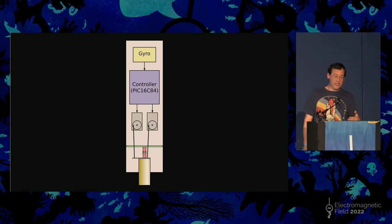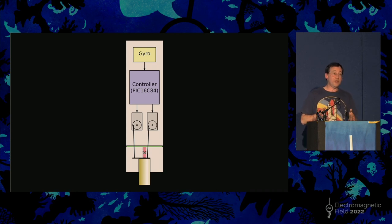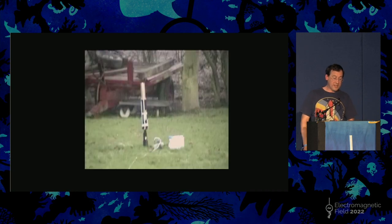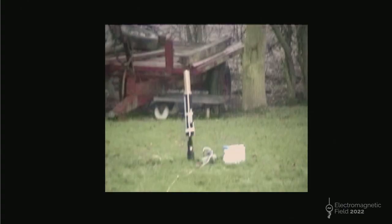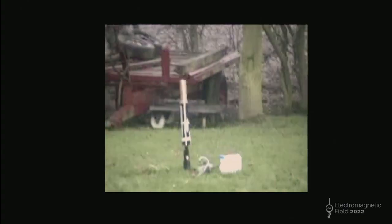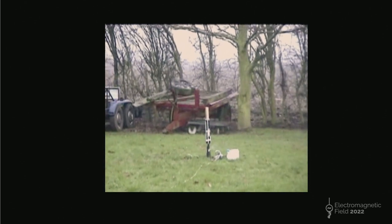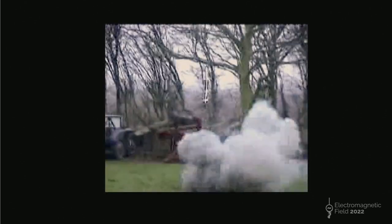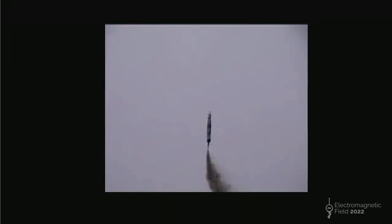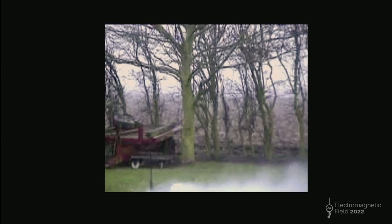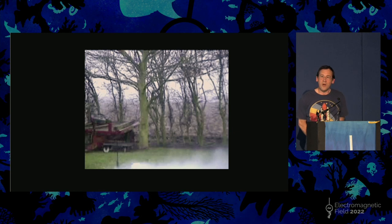The inside of the rocket is pretty old school: there's a gyro feeding a little microcontroller, which operates two radio-control servos that then gimbal the engine. Here's a film — potato quality, because that's all we really had in the late 1990s. You can see it's sort of stable, doesn't go very high, the parachute comes out and doesn't really have time to open. But it kind of worked.